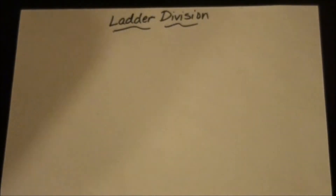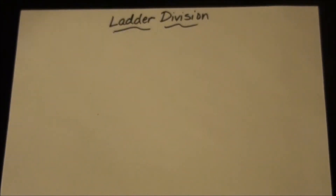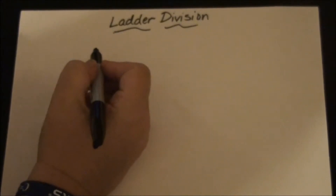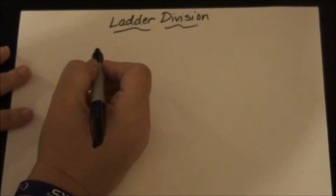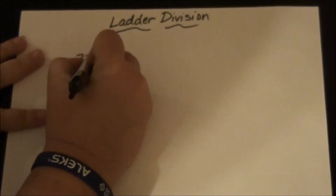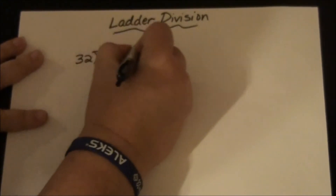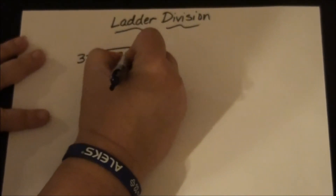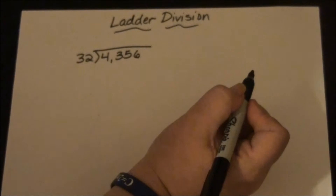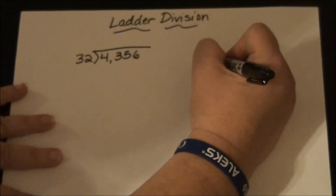This algorithm is called ladder division. It's good for fourth grade and up where students have to divide more than a single-digit divisor into a multi-digit dividend. Let's do 32 goes into 4356. If students have done Egyptian multiplication, this next part won't be so hard.